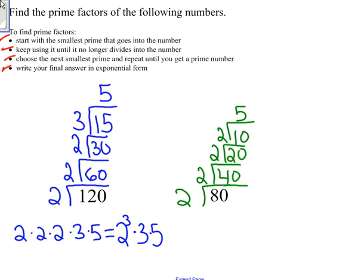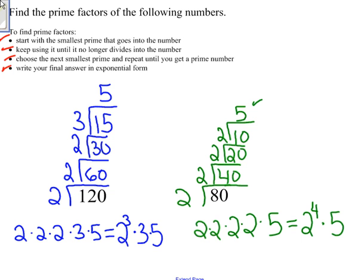Again, I get a prime number up at the top here, so I know I have finished finding all the primes that go into 80. So 2 times 2 times 2 times 2 times 5 — these are all the prime factors of 80, and that is equal to 2 to the fourth times 5. And that is how you find the prime factors of a number.